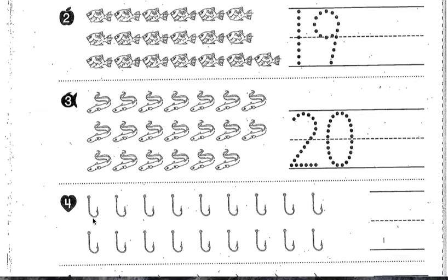Number four — here you have fish hooks. How many fish hooks are there? We're going to write the number that tells how many fish hooks there are. Again, you're going to count each one using your one-to-one correspondence, and then you're going to write the number of how many fish hooks you have. That's for number four.